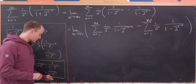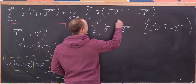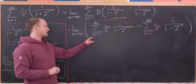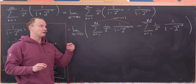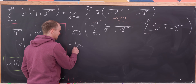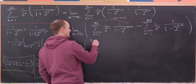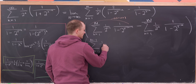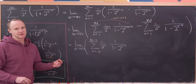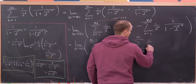Now I'll perform an index change in the first sum, replacing all n's with n plus 1. That changes the starting term: when n plus 1 equals 1, n equals 0, so the sum starts at 0 and ends at N minus 1 — it shifts the indices. So we have the limit as capital N goes to infinity of the sum as little n goes from 0 to capital N minus 1 of 1 over 2 to the n times 1 over 1 minus 2 to the 2 to the minus n, minus the corresponding sum from 1 to N.